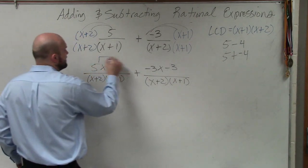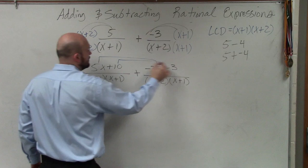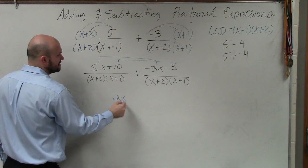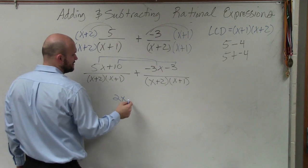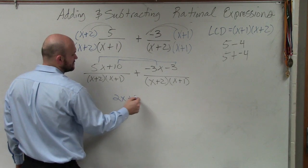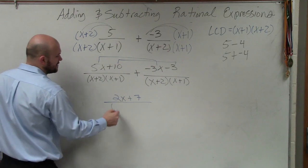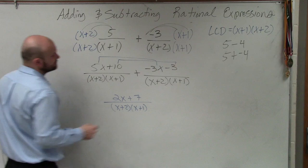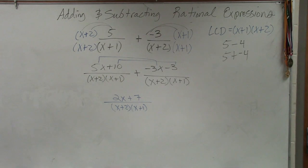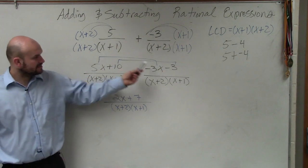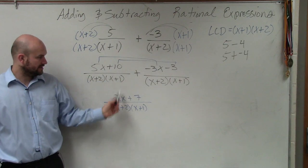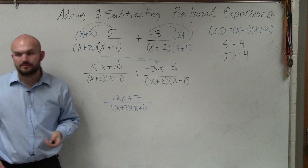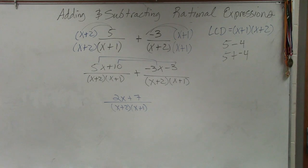So I'm going to say 5x minus 3x and 10 minus 3. So 5x minus 3x is 2x, 10 minus 3 is going to be plus 7, and that's all over our common denominator, x plus 2 times x plus 1. I just did 5x minus 3x gives us 2x, 10 minus 3, because you can only add the x's and the numbers, right? Is that it? Yep.